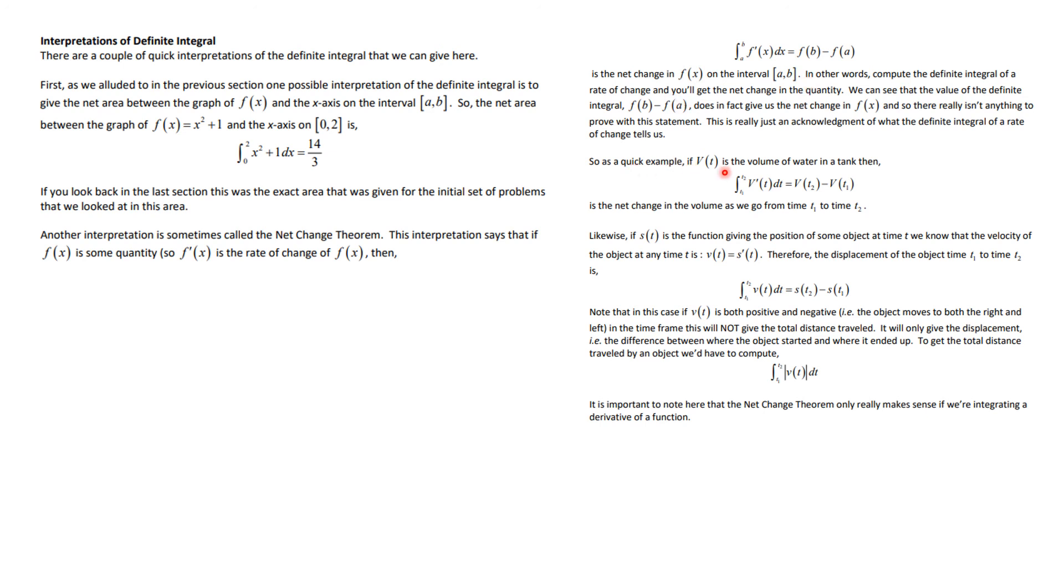Let's do a couple of examples of that. If v is the volume of a tank of water, then if you integrate from t1 to t2 v'(t)dt, that's v(t2) minus v(t1). That's the net change in volume over that time. It could go up or down. Likewise, if s(t), pay particular attention to this, this deals with rectilinear motion. If s(t) is a function giving the position of some object, we know the velocity is the derivative s'(t). Therefore, the displacement of the object, the net displacement of the object from t1 to t2, is the integral of the derivative, which is s(t2) minus s(t1). Now you can go different directions, but that's a net displacement.